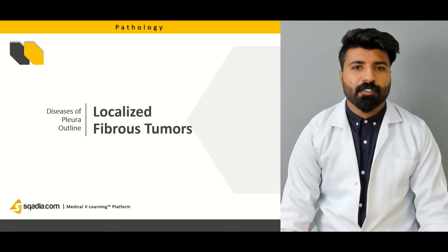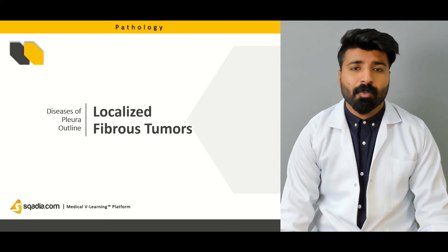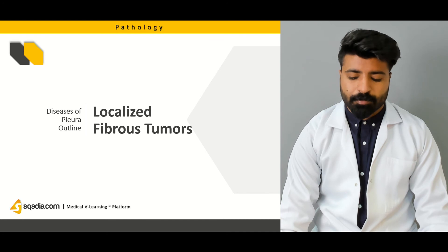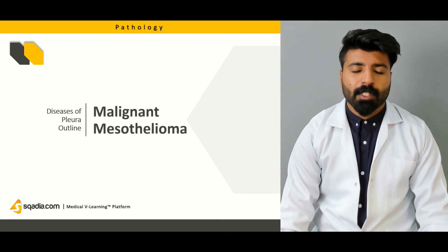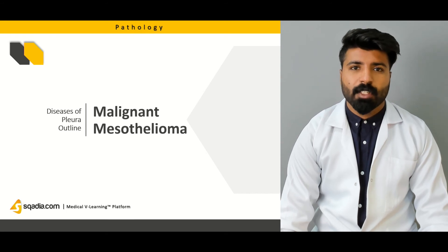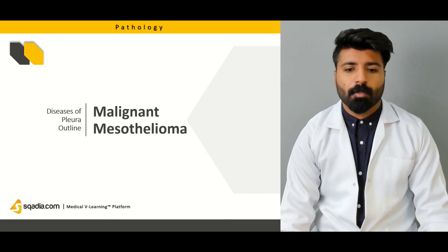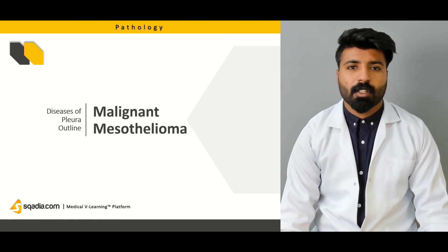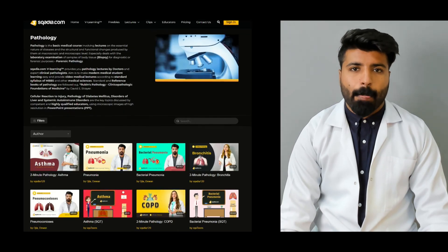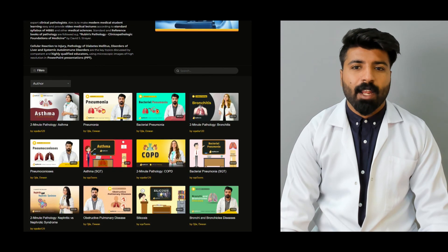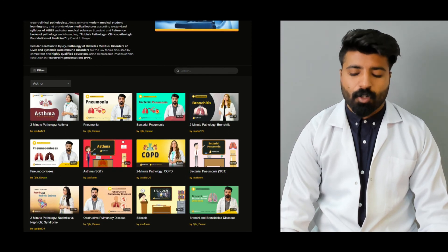We're going to talk about localized fibrous tumors — why they are benign and what clinical symptoms the patient will present with. Then we're going to talk about malignant mesotheliomas — why these are called mesotheliomas, because the Pleura is made up of mesothelium. We're going to talk about malignant mesothelioma and what clinical features a patient will present with. To watch this lecture completely and other variety of lectures, please subscribe to sky.com.